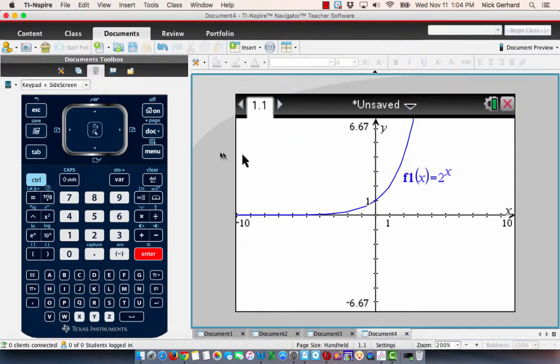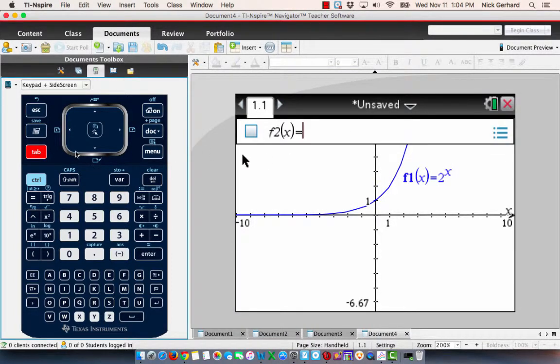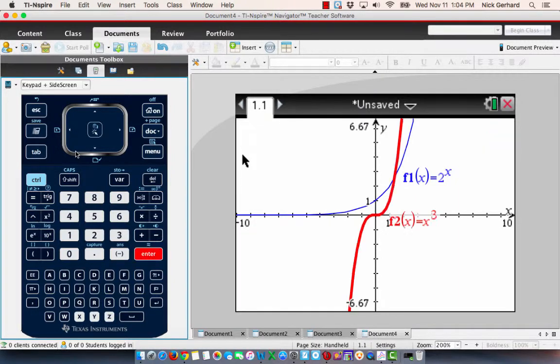And I can see that graph. And then I'm also going to type in the other graph, which is, in this case, x to the 3rd. This is for the first problem. And we want to see where is 2 to the x greater than x to the 3rd.